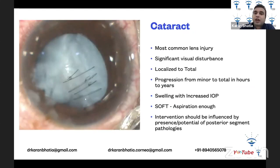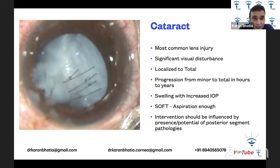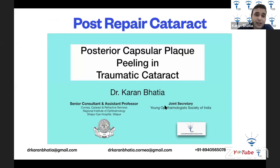Cataract is the most common lens injury; it causes significant visual disturbance and can range from localized to total. Progression can go from a minor injury to a total cataract in hours to years. There is swelling with increased IOP, and the lens is generally soft, so aspiration alone is often enough to remove it. Intervention is influenced by what is happening in the posterior segment.